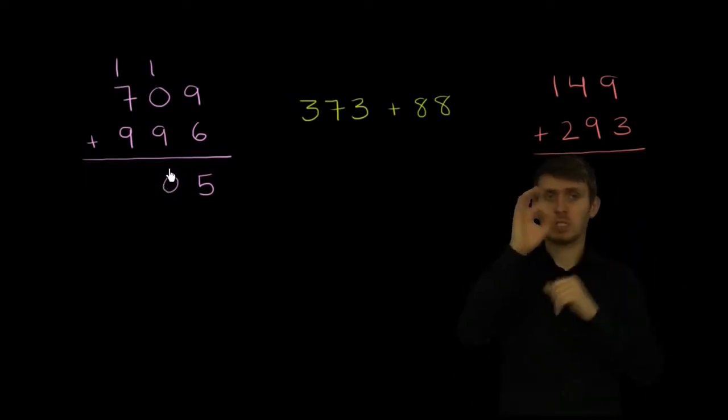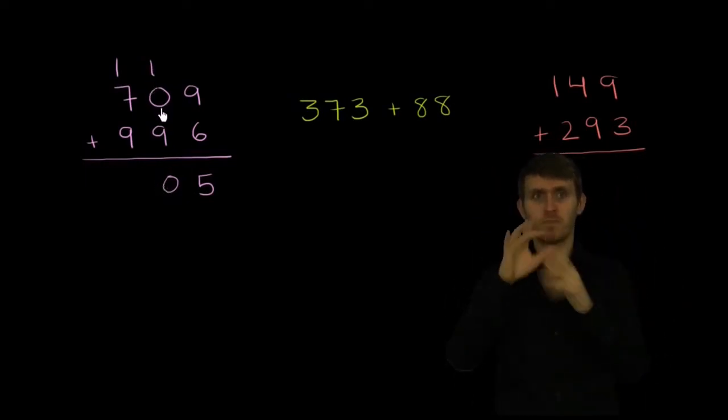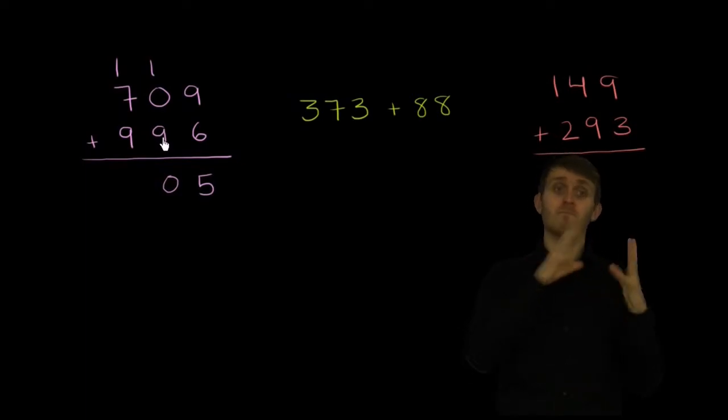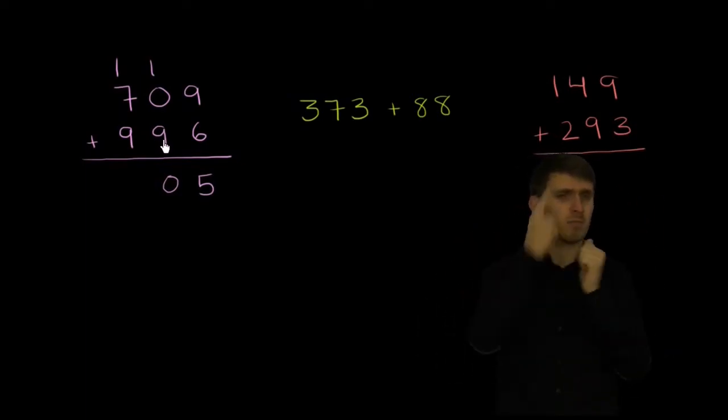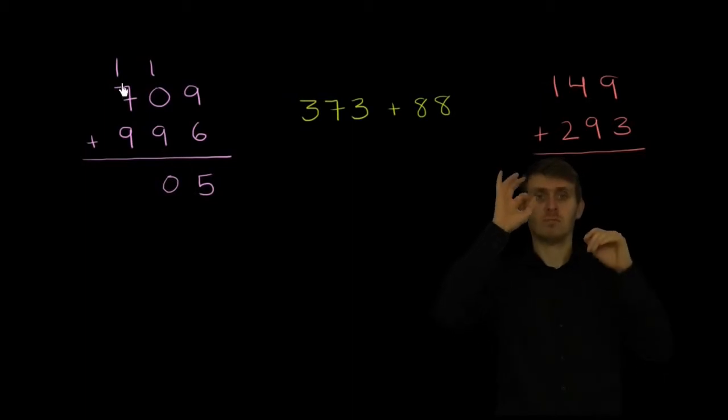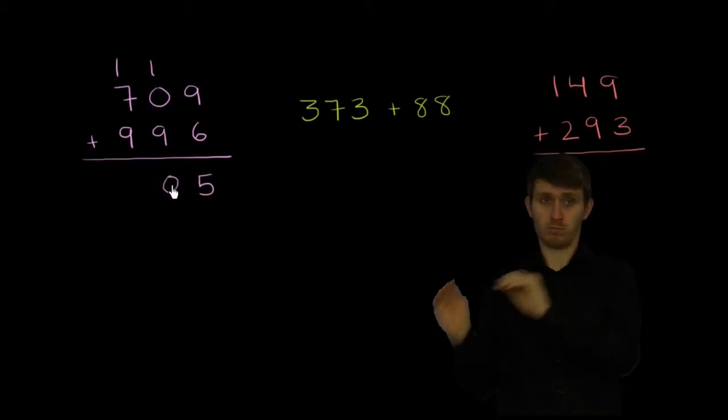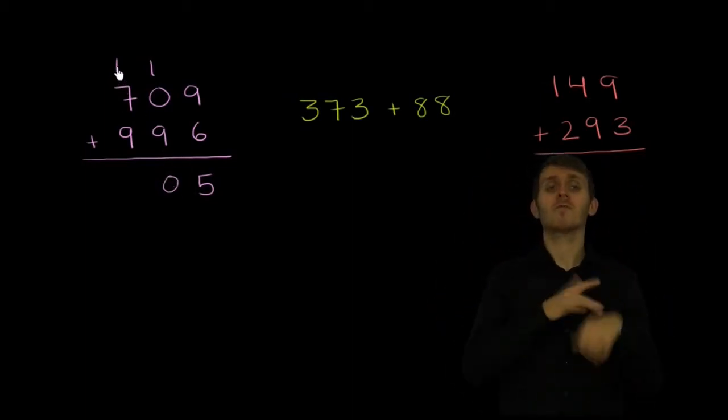Now what does that really mean? Well, this is 1, 10 plus 0 tens plus 9 tens, which is 10 tens. 10 tens is 100. Or another way to think about 100, it's 100 and 0 tens. So that's all that carrying represents.